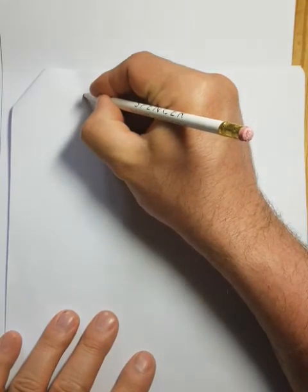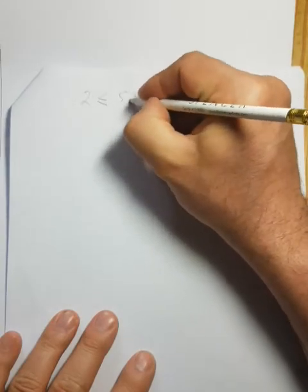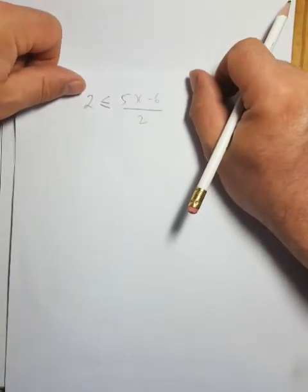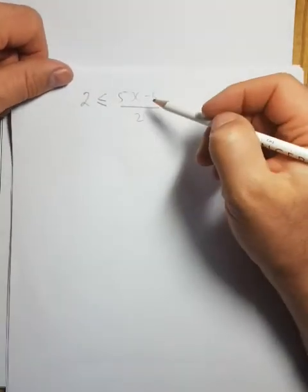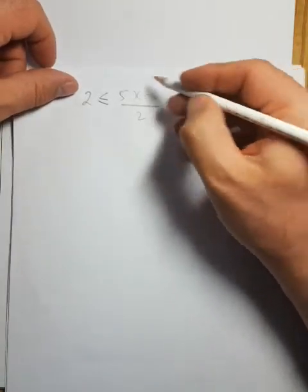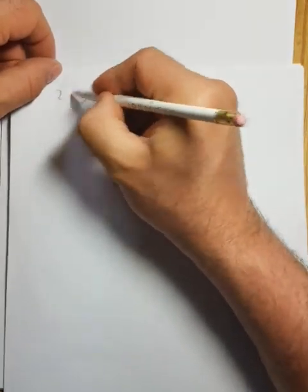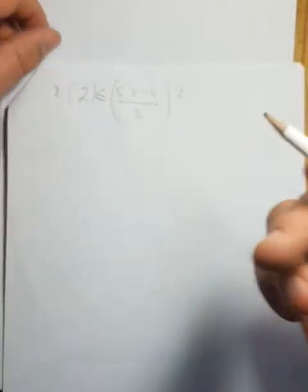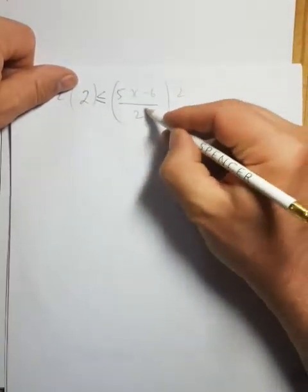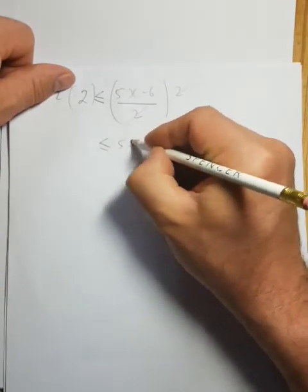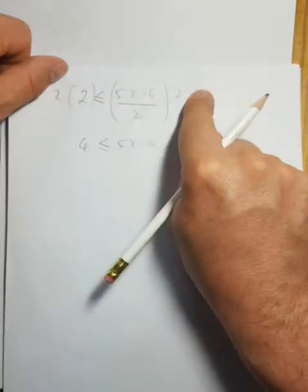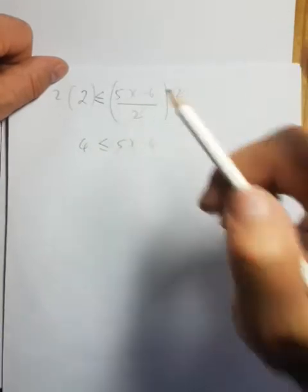Let's do one more example: 2 is less than or equal to (5x minus 6) over 2. Rules for maths don't change just because the sum looks different. First, get rid of the fraction — multiply both sides by 2. On the left we get 4, on the right the 2's cancel and we have 5x minus 6. By the way, if that had been a minus 2 on the bottom and we multiplied by minus 2, the inequality sign would have flipped.